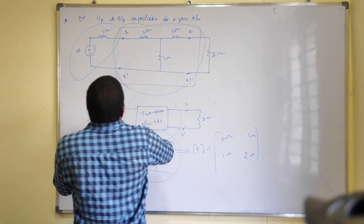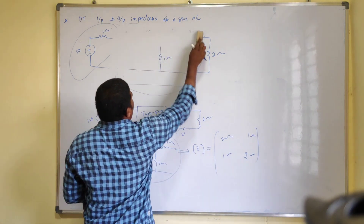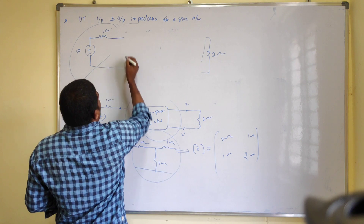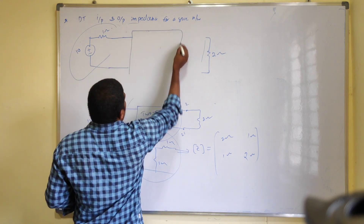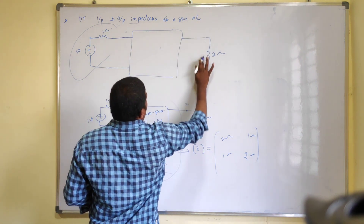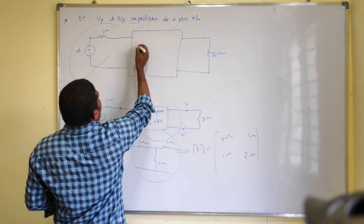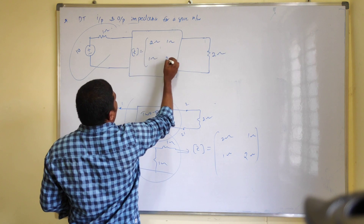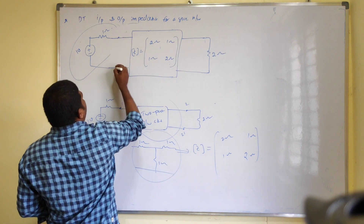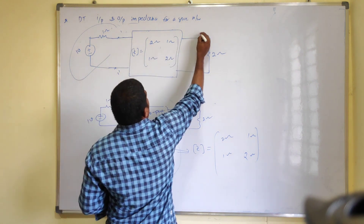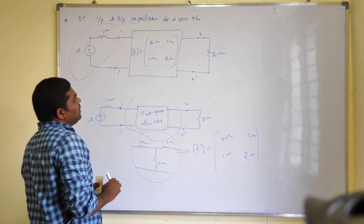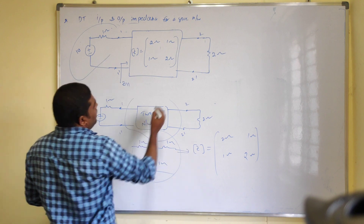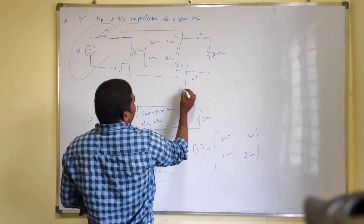Now, this entire circuit can be replaced by a two-port network block with Z-parameters: Z11 = 2 ohms, Z12 = 1 ohm, Z21 = 1 ohm, Z22 = 2 ohms. This is your one-one-dash terminal, and this is your two-two-dash terminal. At port 1 we have Z11, and at port 2 we have Z22.